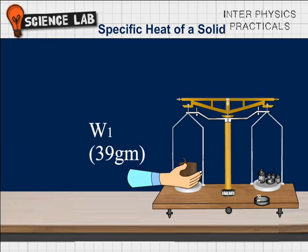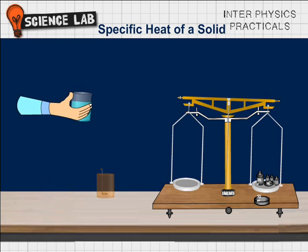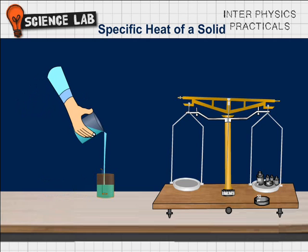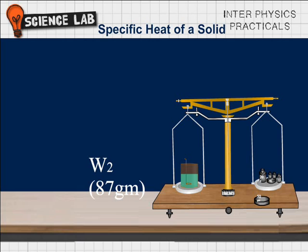Fill the calorimeter with water up to half the level. Mass of calorimeter filled with water W2 is 87 grams. Place the calorimeter in the wooden box and note down the initial temperature. Initial temperature T1 is 27 degree centigrade.